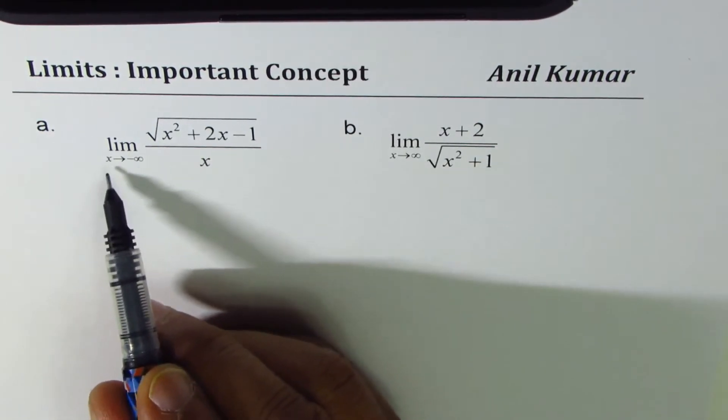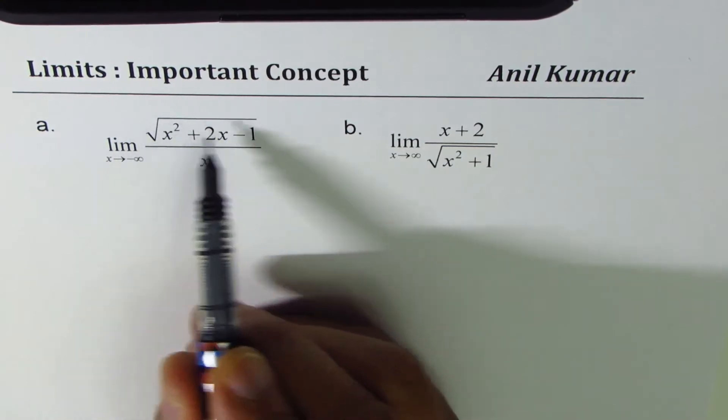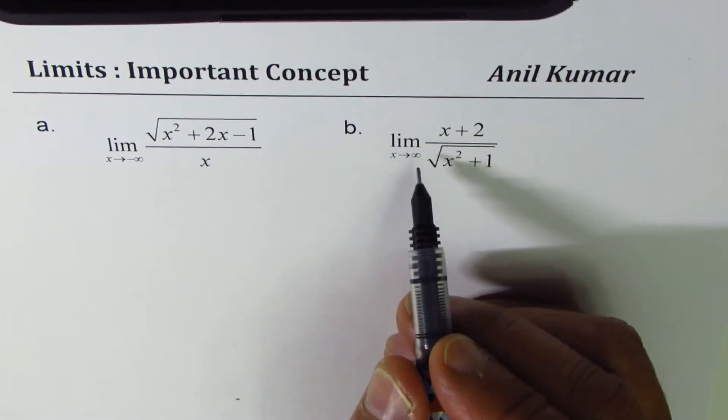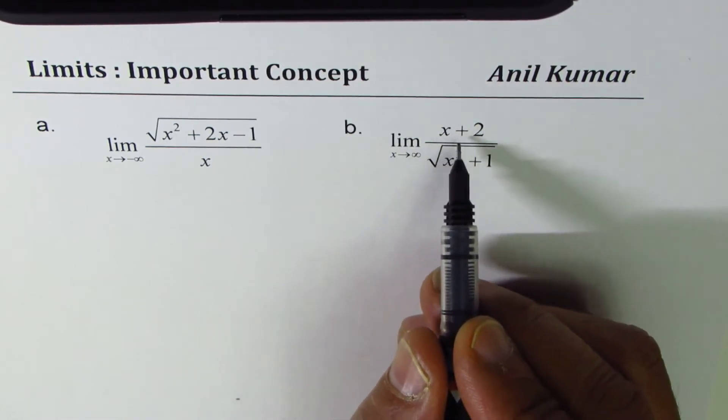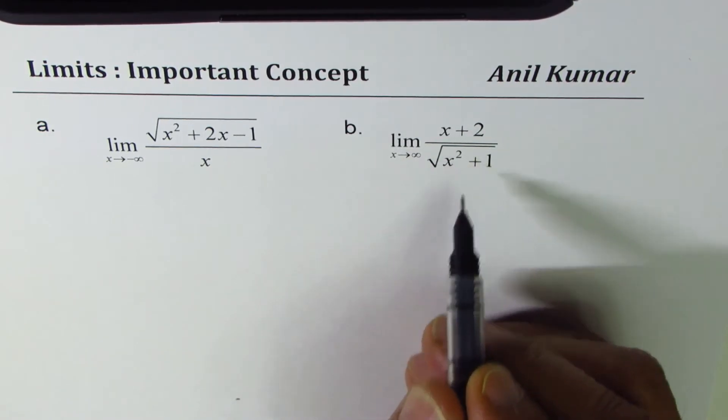The first one is limit when x approaches minus infinity for square root of x square plus 2x minus 1 divided by x and here we have limit x approaches positive infinity for x plus 2 divided by square root of x square plus 1.